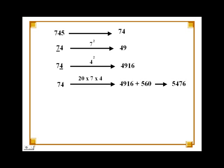Next, we multiply all the digits in 74 with each other, and then multiply the result with 20. So multiplying 7 with 4 gives us 28, and multiplying 28 with 20 gives us 560. Add 560 to 4916 to get the intermediate result 5476. This is the square of 74.